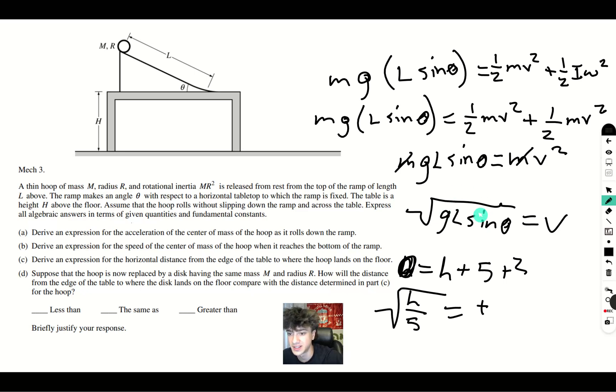And now we know that this is a constant speed, so we multiply by square root of H over 5 in order to get the horizontal distance. So, it will be square root of G L sine theta times square root of H over 5 will get you that horizontal distance.